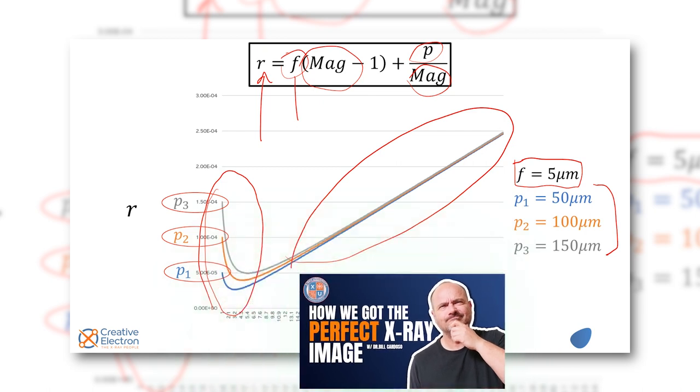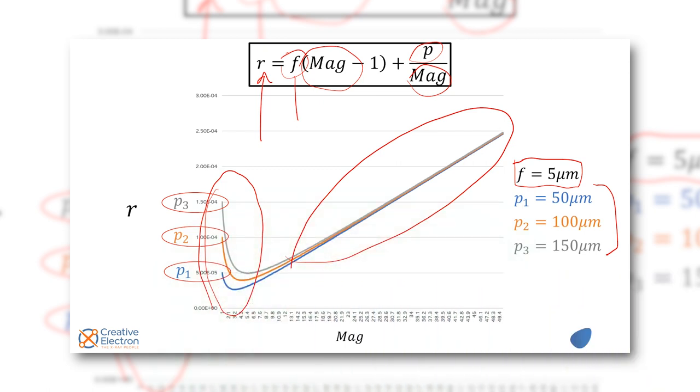So magnification shows up in the denominator and the numerator, so it's a straight line and an inverse function and that's exactly what we see here. Depending where you're going to be, you have to pick specific features of the x-ray imaging system to optimize a specific application. There's no one answer fits all.